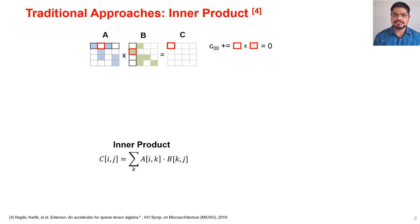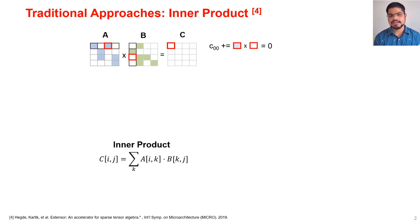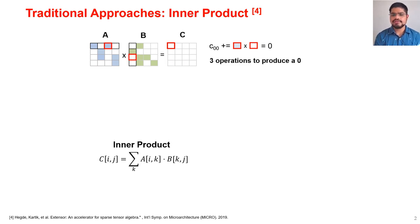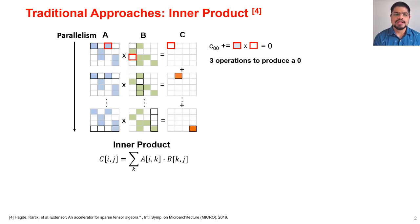In the second cycle, B has the smallest index but A has a zero, so we don't perform any multiply-accumulate. And even in the last step, A has a non-zero and B has a zero, so we don't perform any multiply-accumulate. Thus, even with three operations we produce a single output element which is a zero. The parallelism comes from the fact that different output elements can be produced in parallel.